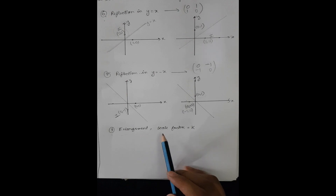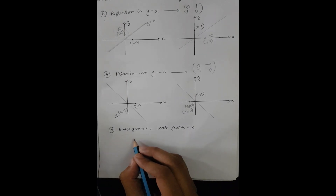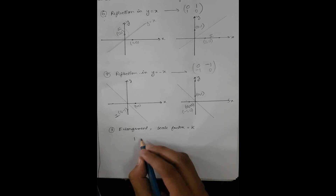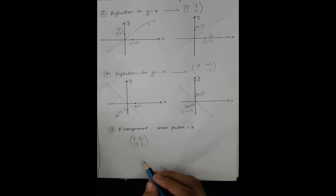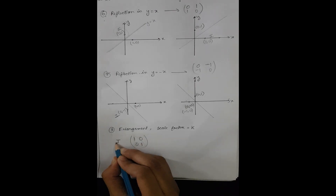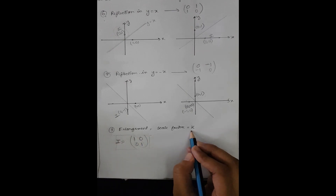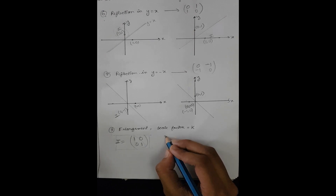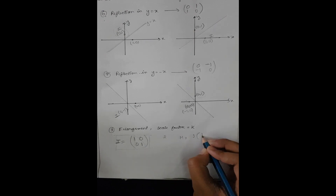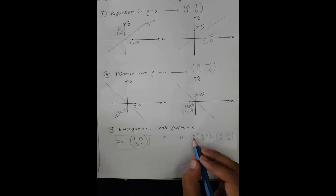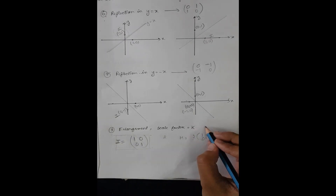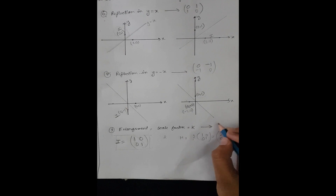Next comes enlargement with scale factor k. The identity matrix has 1s diagonally and 0s elsewhere. All you have to do is multiply the scale factor with the identity matrix. For example, if the scale factor is 2, the matrix will be [2, 0; 0, 2]. If it's 3, it will be [3, 0; 0, 3]. In general, for scale factor k, the matrix will be [k, 0; 0, k].